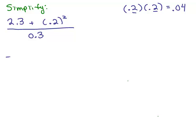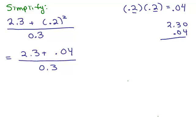So this becomes 2.3 plus .04 all over 0.3. I still haven't simplified the numerator so I have to add by lining up the decimal point. I have 2.3 and .04, that adds up to 2.34.